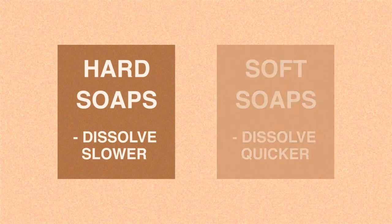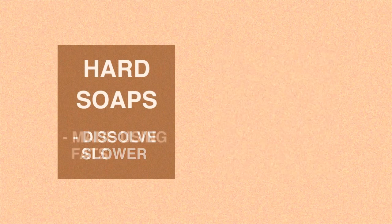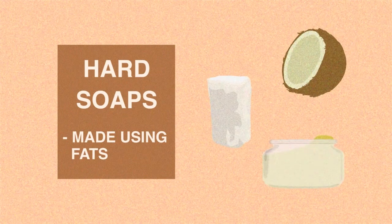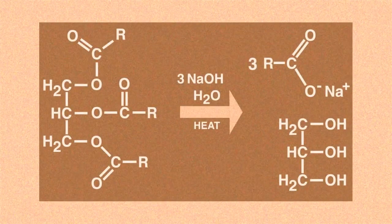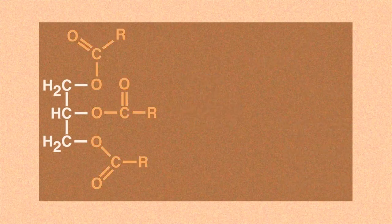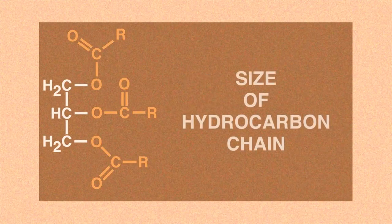Hard soaps are made by using certain fats, like coconut oils, lard or cocoa butter. Look at the equation shown now. The R group represents the size of a hydrocarbon chain.